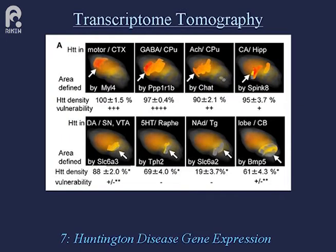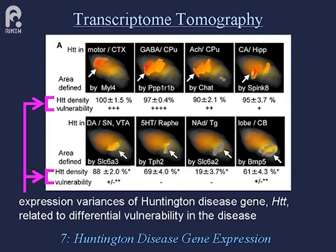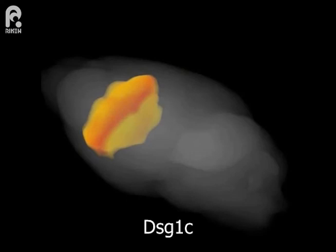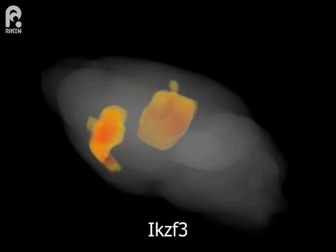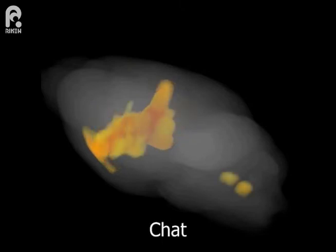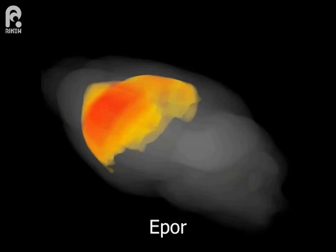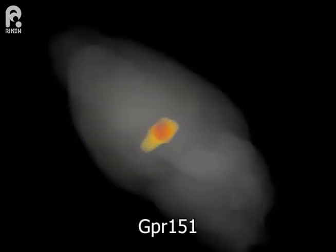The information is useful for understanding molecular mechanisms of human diseases in model animals. Our tomographic approach will provide integrated information about multiple gene expression in the anatomical context and contribute to molecular target search for innovation in preemptive medicine and drug discovery.